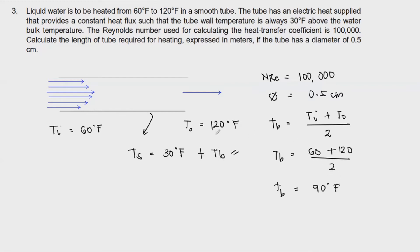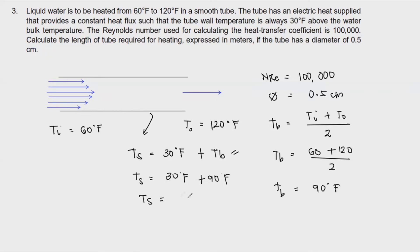If we also want to determine the surface temperature Ts, that is 30 degrees above the bulk: 30 + 90 = 120 degrees Fahrenheit. So the surface temperature is 120°F — wait, that gives 120°F. Actually the surface temperature is stated as 30 degrees above bulk, so Ts = 30 + 90 = 120°F. These two — bulk and surface temperature — are the most important temperatures here.